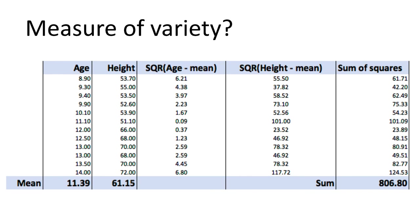Why is this a measure of variability? If all ages had been the same — say 10 — and all heights had been the same — say 56 — there would be no variability. In that case, age minus mean equals 0 for everyone, and height minus mean equals 0 for everyone, so the overall sum would be 0. The higher this number, the more variability that exists within the dataset. This is the variability we want to retain when we break down a dataset into clusters.